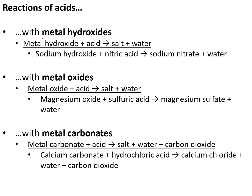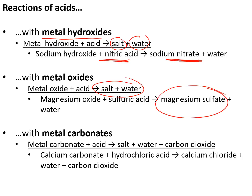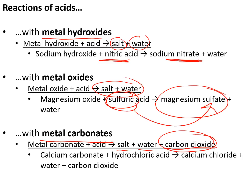Reactions of acids. Acids react with metal hydroxides to make a salt and water — for example, sodium hydroxide and nitric acid make sodium nitrate and water. Metal oxides react with acid in the same way to make a salt and water — for example, magnesium oxide and sulfuric acid make magnesium sulfate and water. With metal carbonates, acids react to make a salt, water, and carbon dioxide too, so bubbles of gas are produced — for example, calcium carbonate and hydrochloric acid make calcium chloride, water, and carbon dioxide. Notice calcium chloride is our salt — chloride because it is hydrochloric acid.